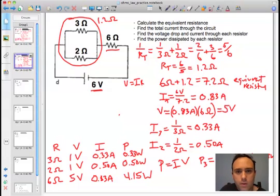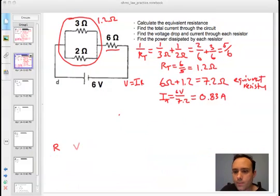So then we went through it. We had the equivalent resistance, we calculated the total current of the circuit, the voltage drop and current of each resistor, and finally we calculated the power dissipated by each resistor. So there you have it, a compound circuit in series and parallel configuration. Thanks for watching. See you next time. Bye.